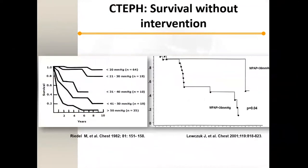What is the natural history of chronic thromboembolic pulmonary hypertension? From epidemiologic studies, the higher the mean pulmonary artery pressure, the worse the outcome. If a patient has a mean pulmonary artery pressure of 50, the two-year survival is less than 20%. It's a very morbid disease — like heart failure, and more morbid than many malignancies.